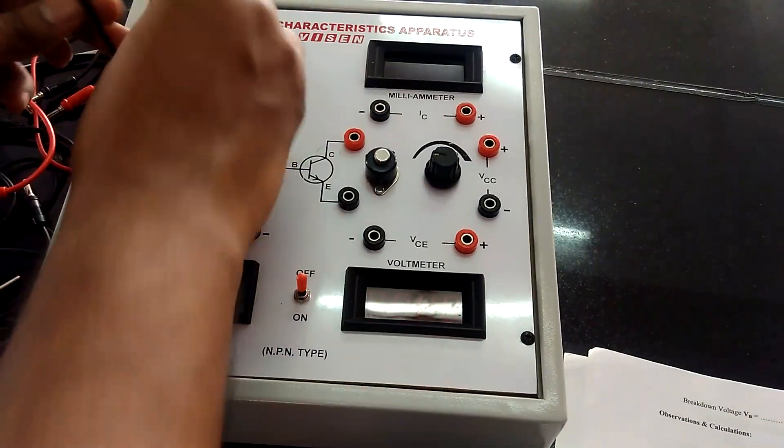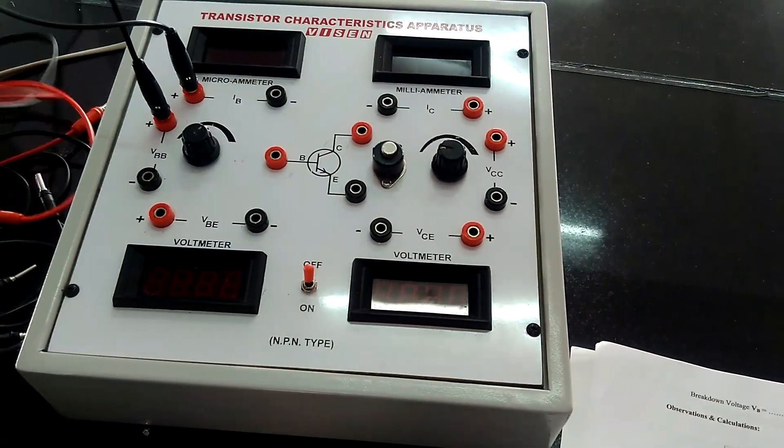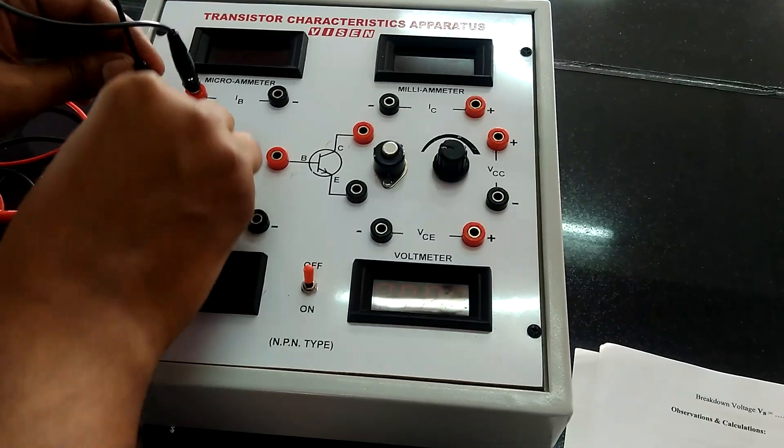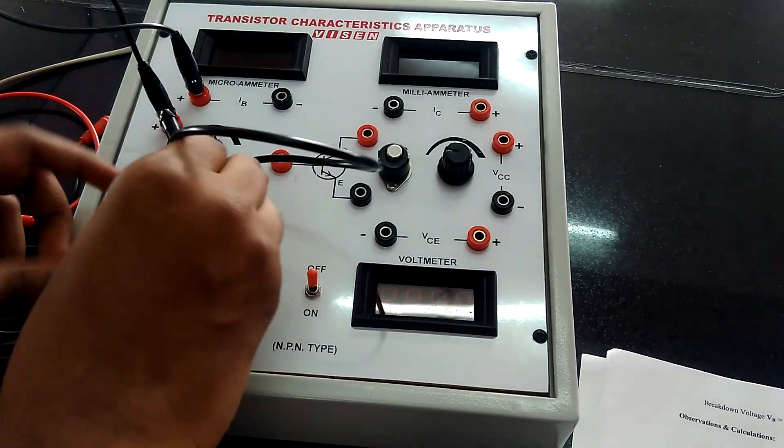Take VB to the positive of IB and take another wire and jump positive of VB to the positive of VBE.